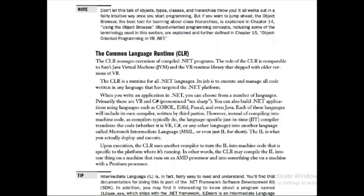In short, the Common Language Runtime is a platform that runs code written in any language, which means it's platform independent — you don't have to worry about a platform. When you write an application in .NET, you can choose from a number of languages, for example VB, C#, and ASP.NET. You can also build applications using older languages such as COBOL, FORTRAN, and JARAM. Each of these languages will include its own compiler.